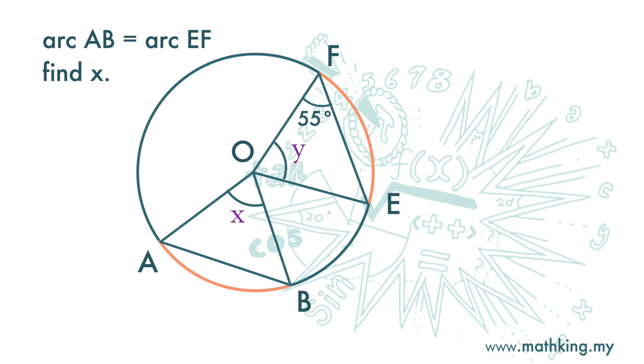Triangle OEF is an isosceles triangle because OE and OF are both radii of the circle, so they are equal in length. Therefore, angle E is also 55 degrees.